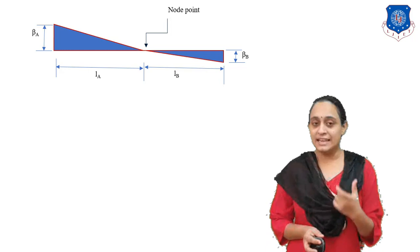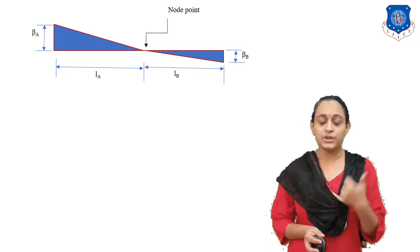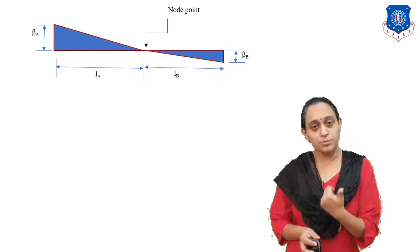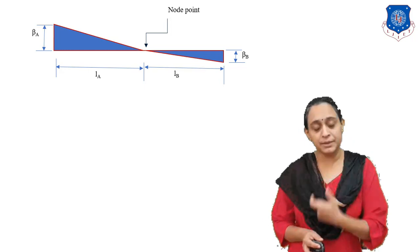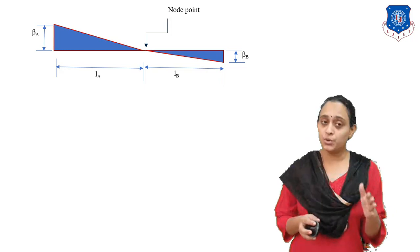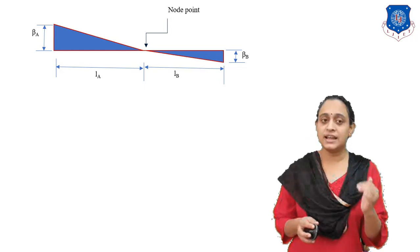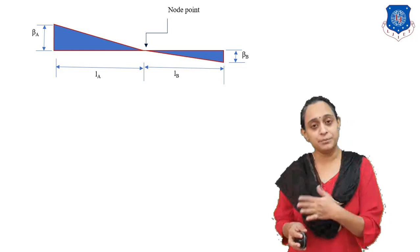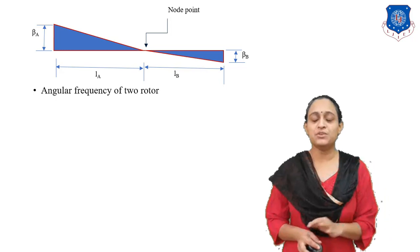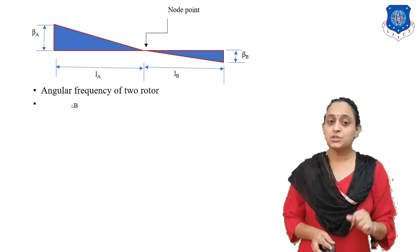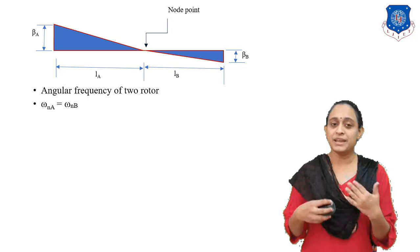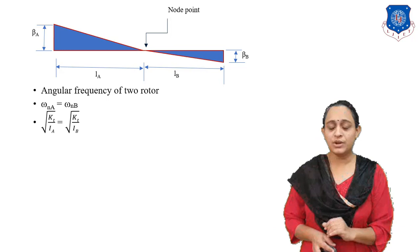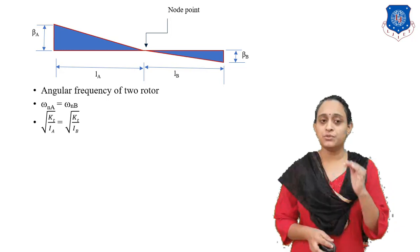The length from the nodal point to rotor A is L_A, and from the nodal point to rotor B is L_B. The amplitude of rotor A is considered as beta_A and the amplitude of rotor B as beta_B. Now let us compare the angle of frequency of the two rotors. By comparing this, we get omega_NA equal to omega_NB. Let us put the values: under root of KT by I_A is equal to under root of KT by I_B.